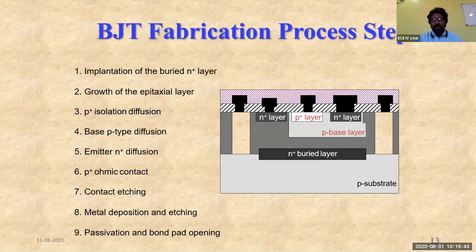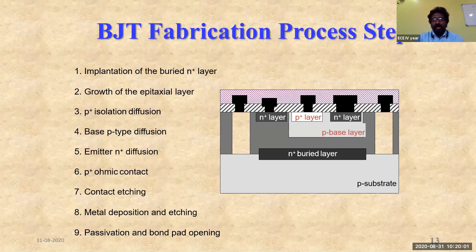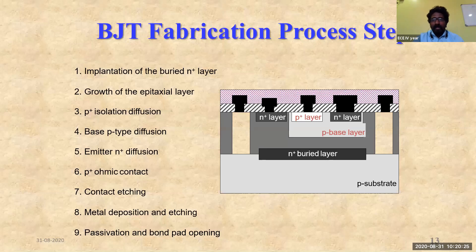In the BJT fabrication process steps, there are nine different fabrication steps. The first is implantation of the buried N+ layer. Next is the growth of an epitaxial layer, then P+ isolation diffusion, base P-type diffusion, emitter N+ diffusion, P+ ohmic contact creation, contact etching, metal deposition and etching, and ninth is passivation and bond pad opening.